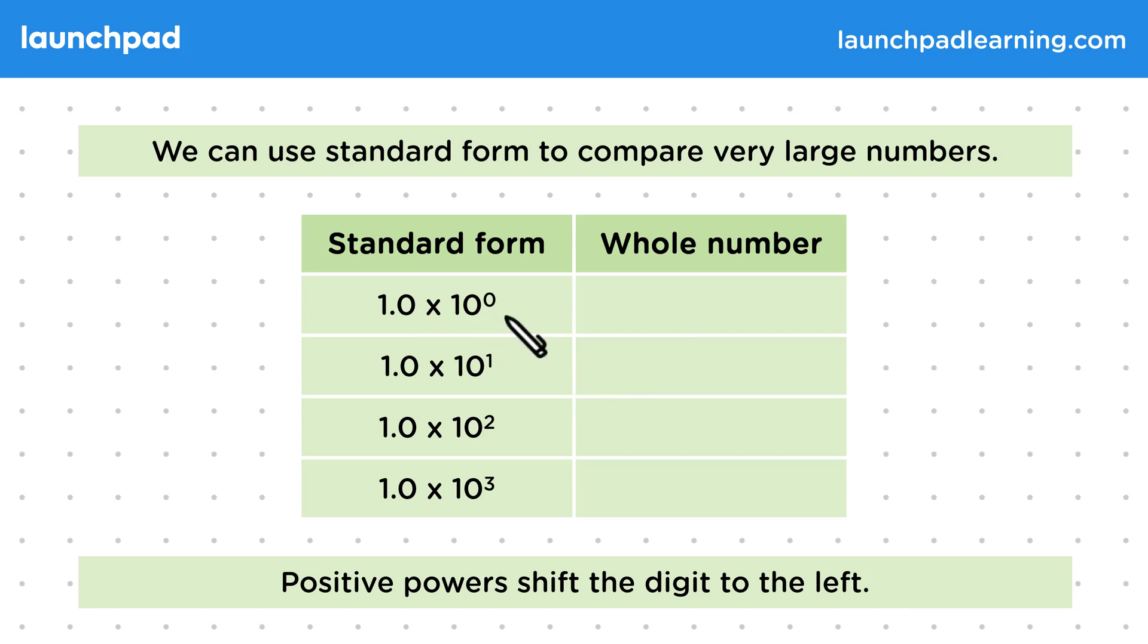So 1 times 10 to the power of 0 is just equal to 1. 1 times 10 to the power of 1 is equal to 10. You can see that as the power has moved from 0 to 1, the digit 1 has moved 1 space to the left. 1 times 10 to the power of 2 is equal to 100. And 1 times 10 to the power of 3 is equal to 1000. As we increase the power of 10 by 1 each time, the value gets 10 times larger.